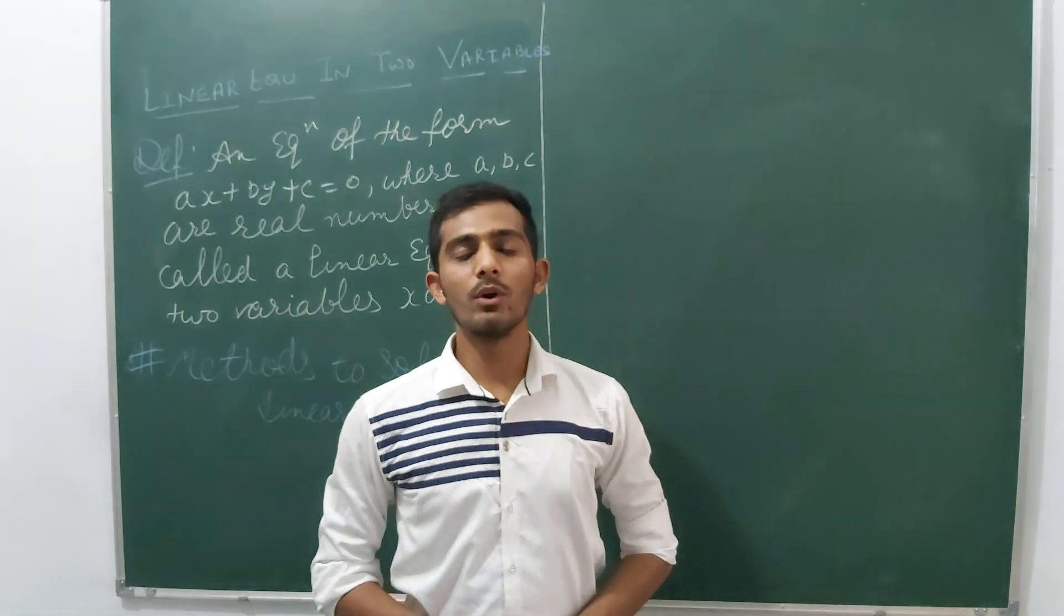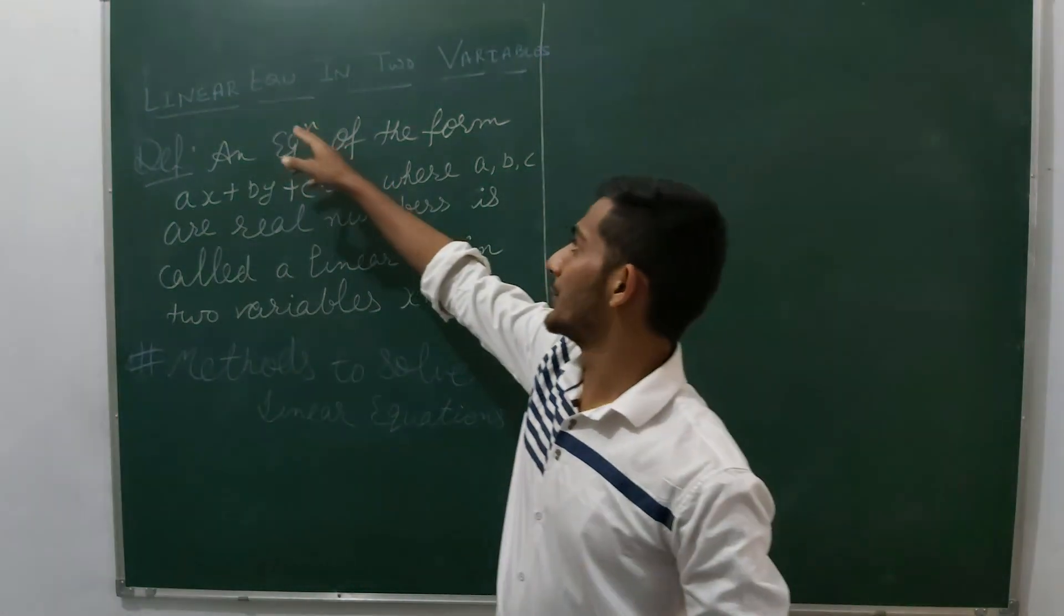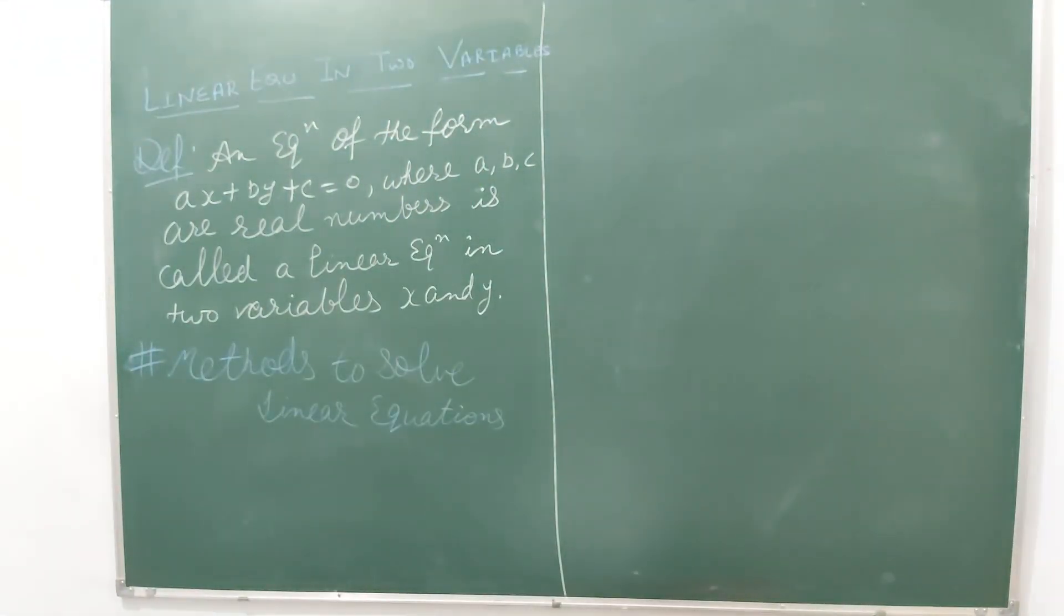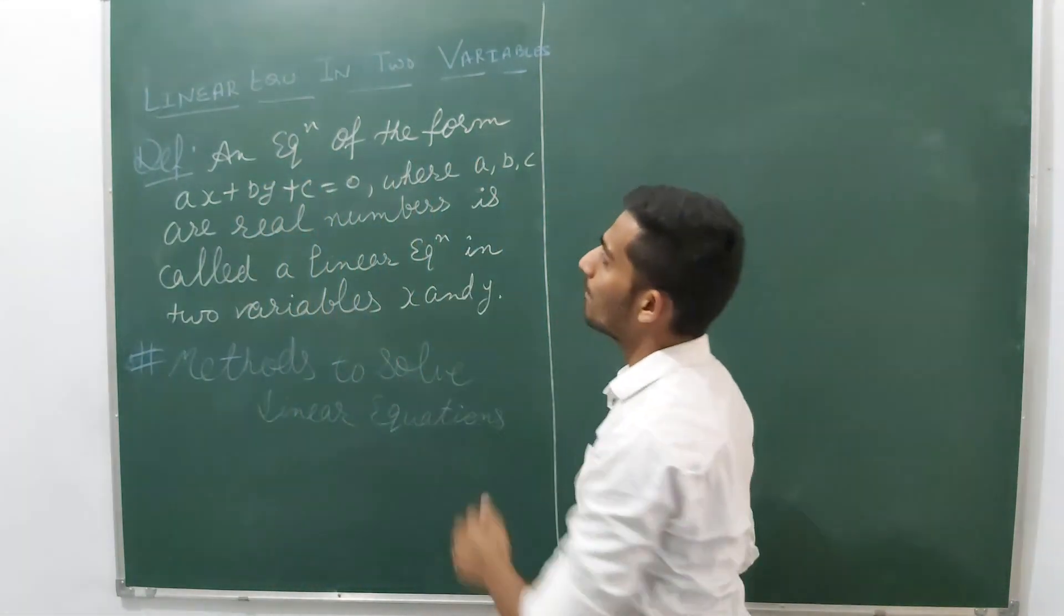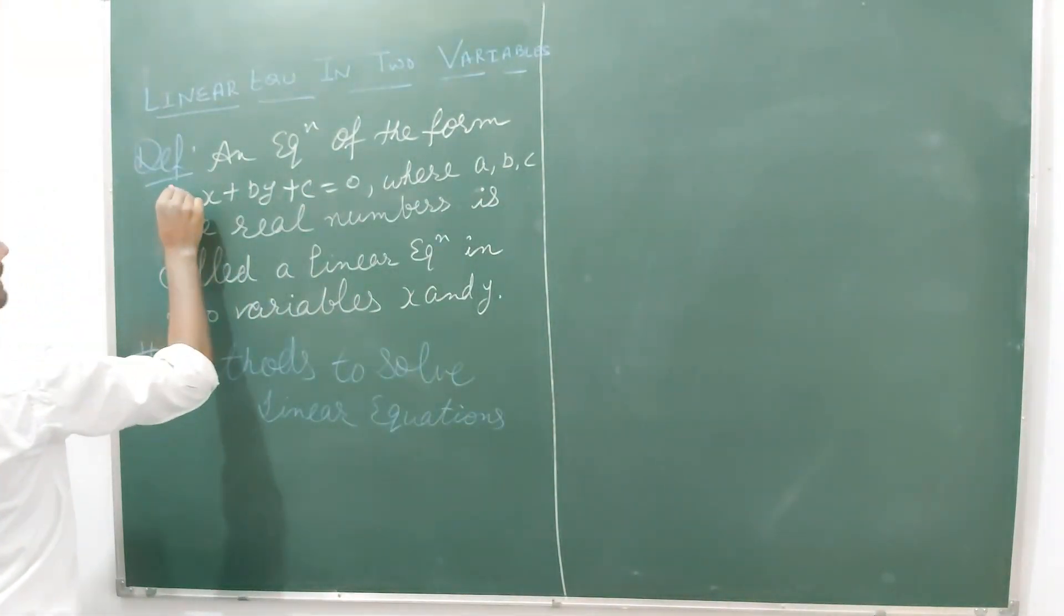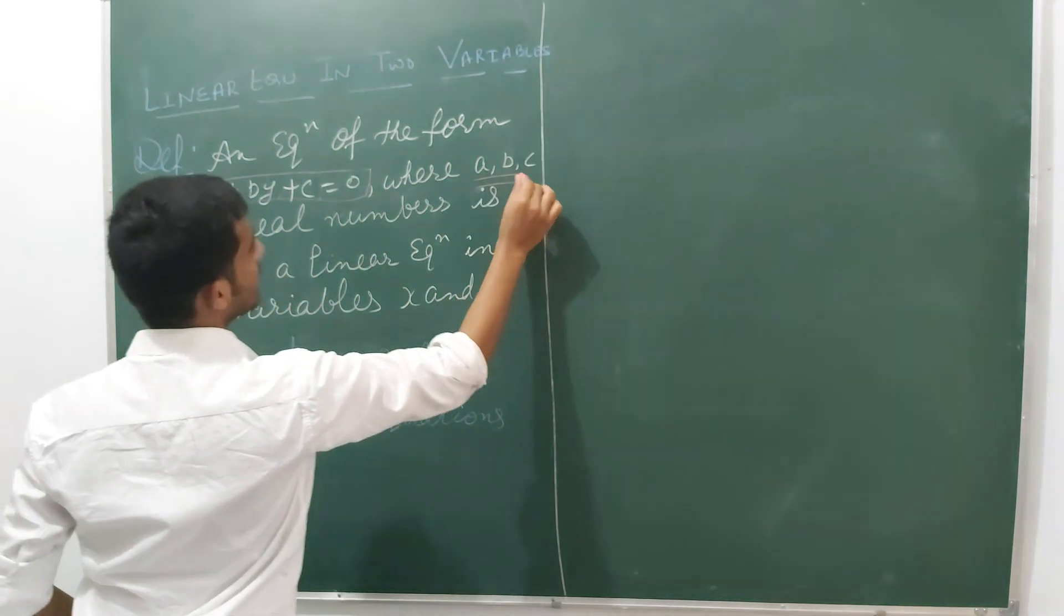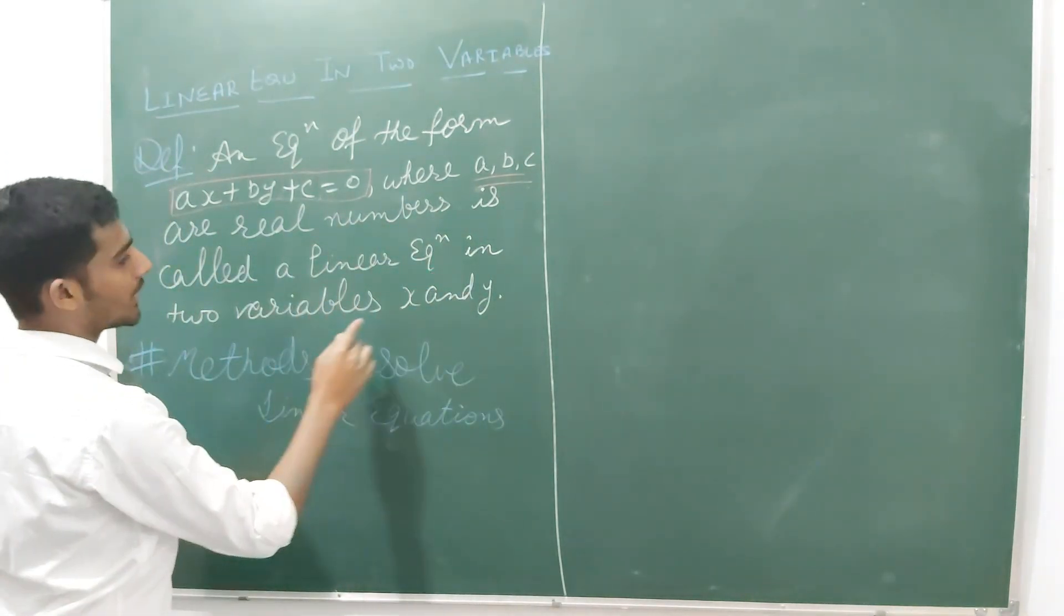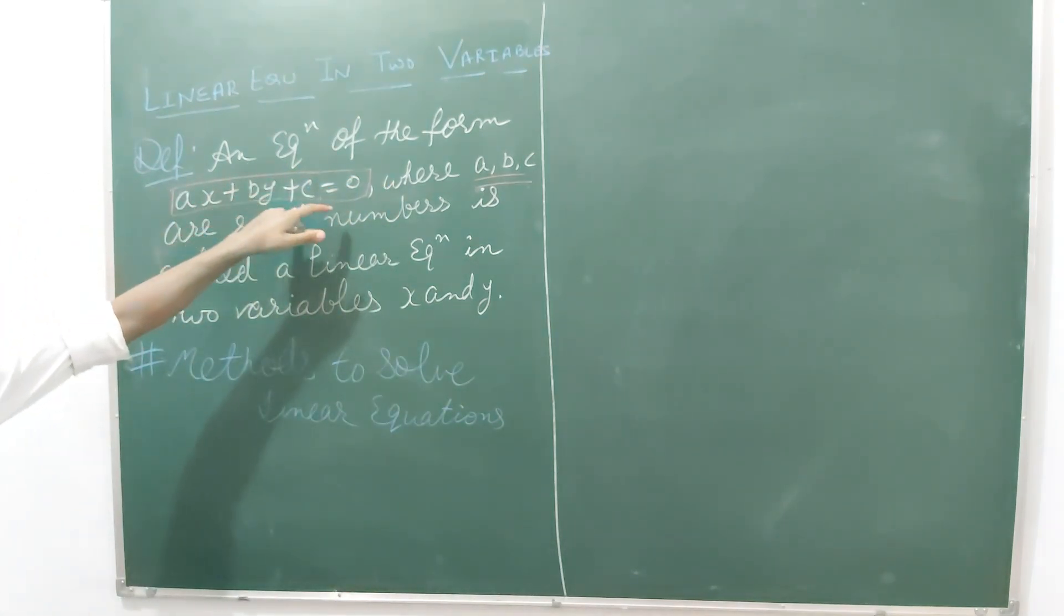Hello friends, today we are going to start our first lecture of class 10th, chapter number 3: Linear Equations in Two Variables. So firstly, let me give the definition. An equation of the form ax plus by plus c equals zero, where a, b, c are real numbers, is called a linear equation in two variables x and y.